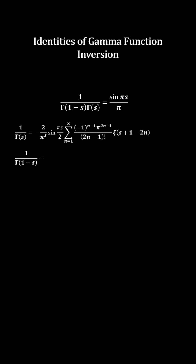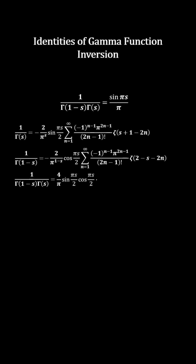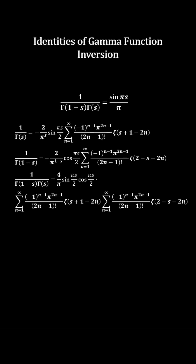In the inversion of the gamma function, the sine of πs/2 or cosine of πs/2 of the reciprocal gamma of s becomes the cosine of πs/2 or sine of πs/2 of the reciprocal gamma of 1 minus s. Therefore,